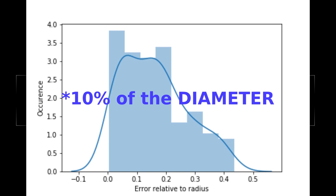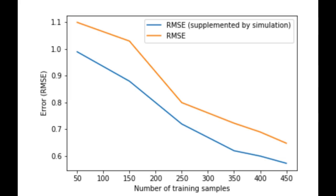However, getting to this level of accuracy required a large number of training samples to be used. This can be time consuming, especially in real-world situations where it's not so easy to precisely position an object within the scanned area. To solve this problem, I used simulation to augment a limited number of training samples from the real world. This was able to drastically improve the model performance for a given number of training samples and meant that much less real-world data needed to be collected.